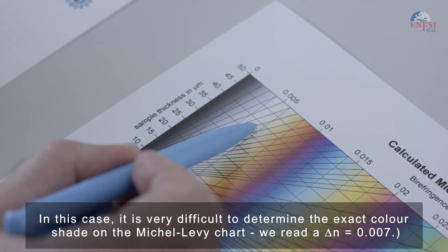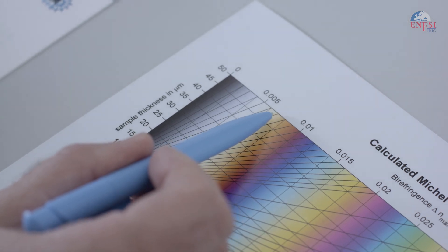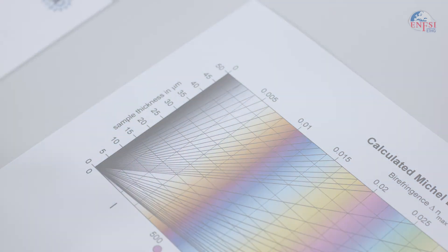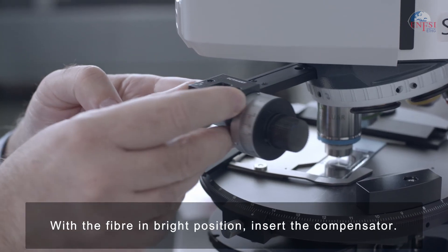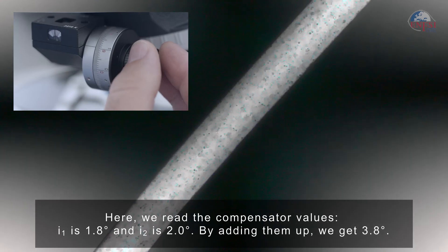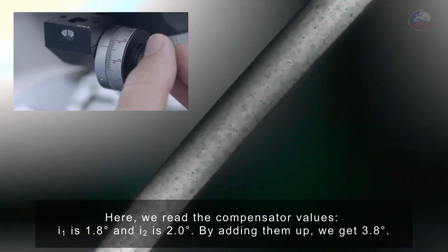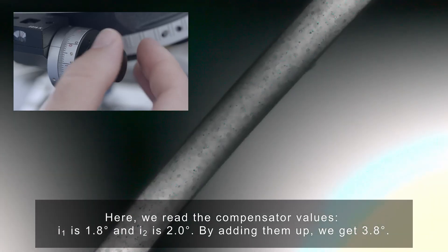Now, we will also determine the birefringence of this fiber with the tilting compensator. With the fiber in bright position, insert the compensator. Here we read the compensator values. I1 is 1.8 degrees and I2 is 2.0 degrees.